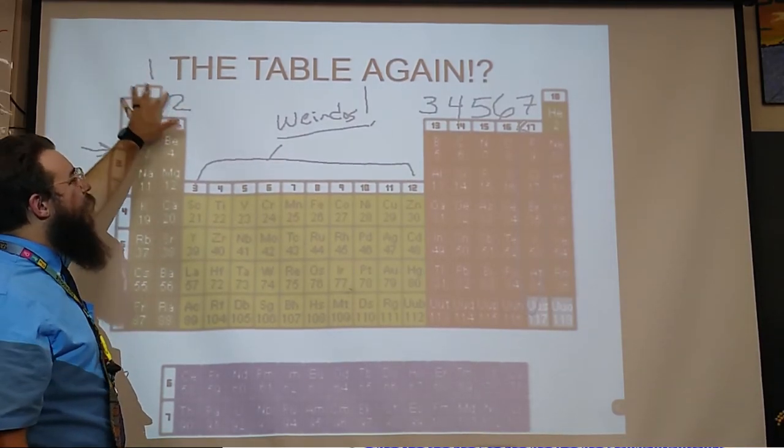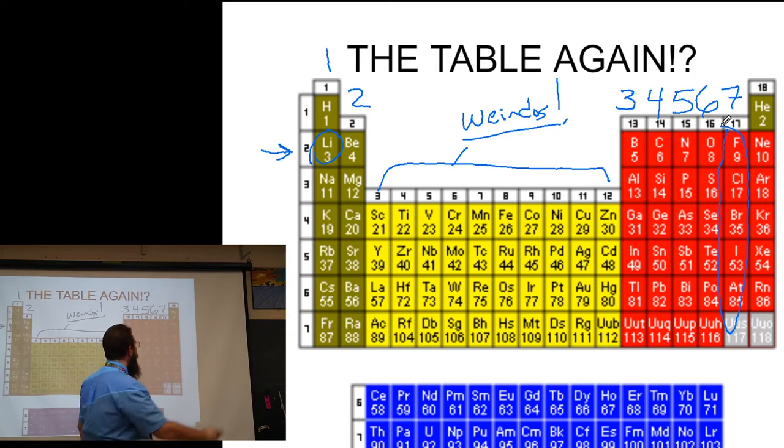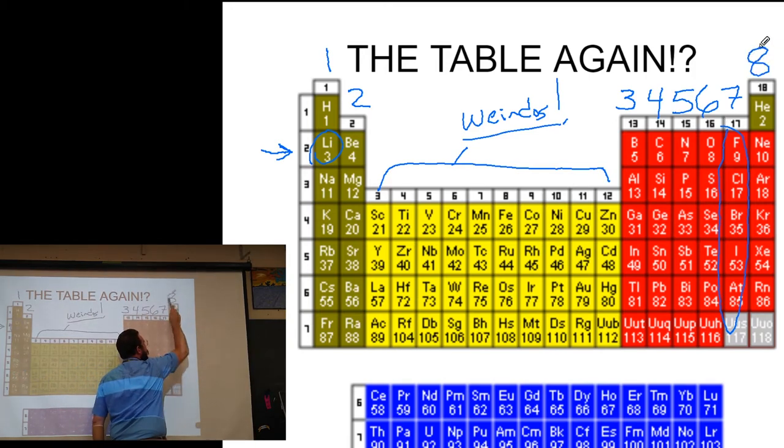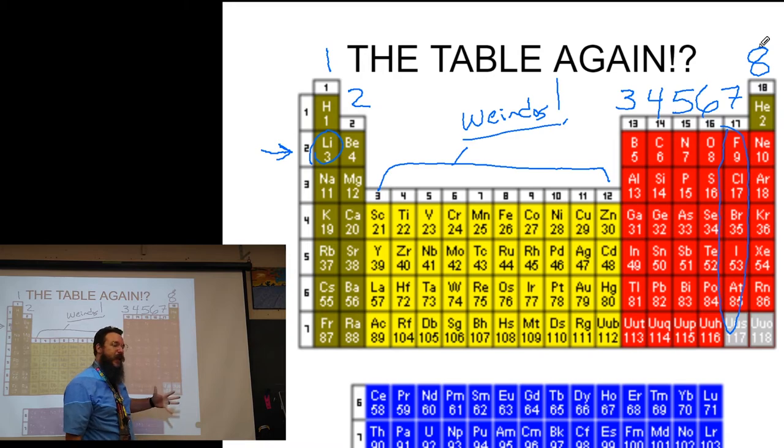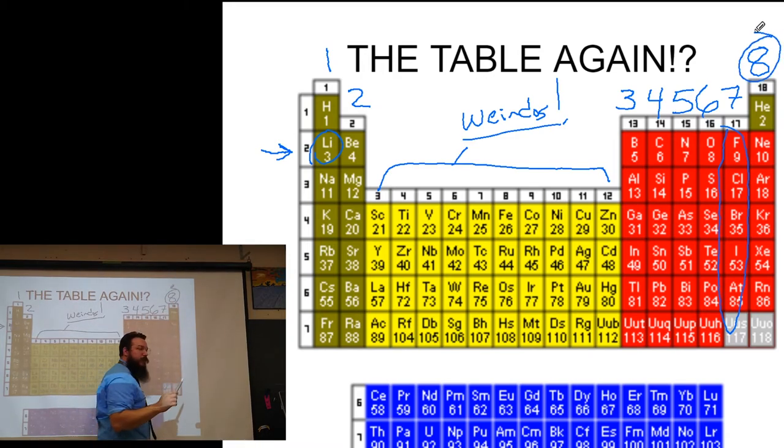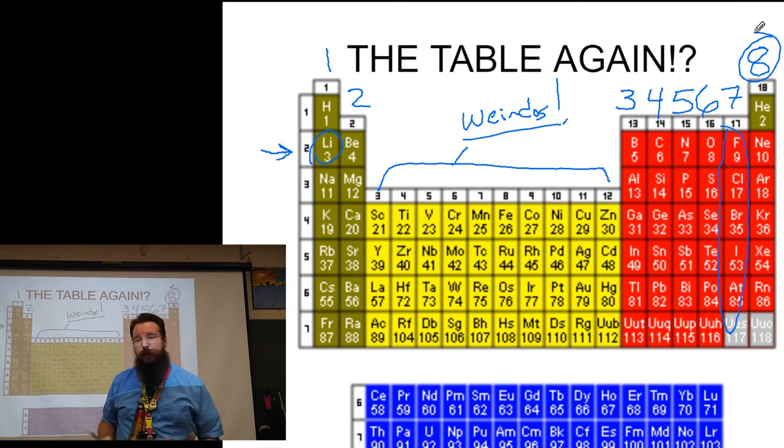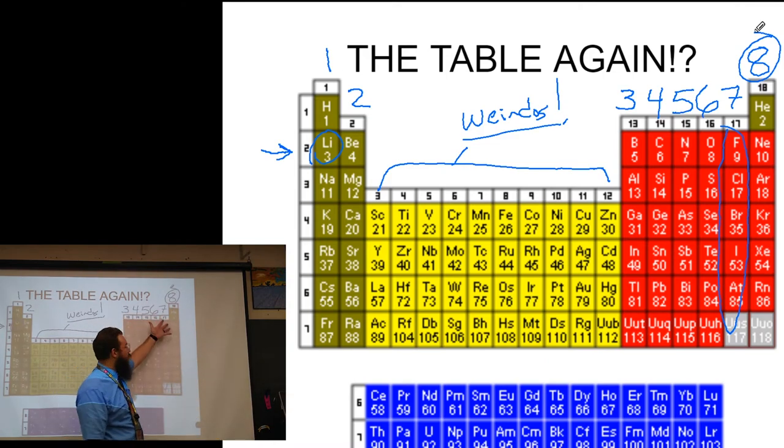Everything over here in family eight has eight valence electrons. Eight is what we need for a full shell, so all of these elements over here in the family we call the noble gases, they don't react at all because they already have a full shell. They don't need to gain or give up valence electrons to fill that outer shell.